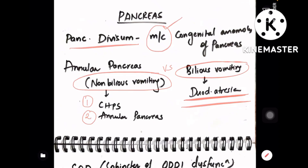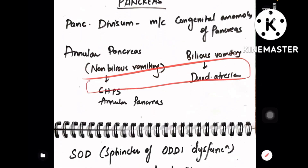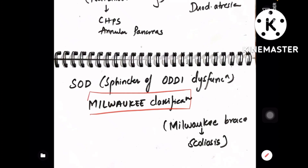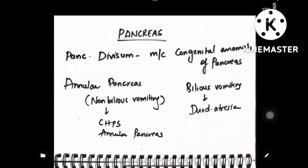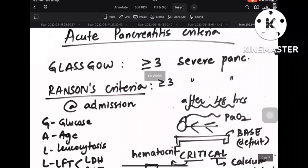This differential diagnosis of bilious versus non-bilious helps in solving questions. For sphincter of Oddi dysfunction, the classification used is the Milwaukee classification. Note that Milwaukee brace is for scoliosis — both share the same name, so Milwaukee classification refers to sphincter of Oddi dysfunction.